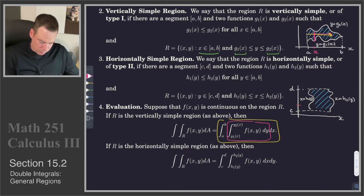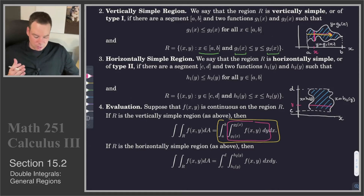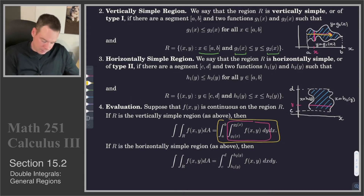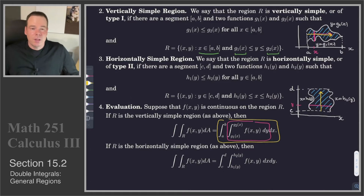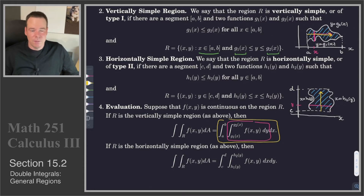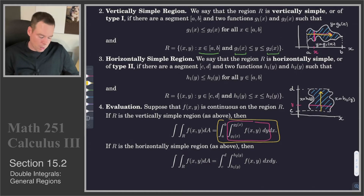Similarly, for a horizontally simple region, we pick a fixed y value first and integrate in the horizontal direction — the integral with respect to x as x ranges from h1(y) to h2(y). Then we let that y value sweep out all y values from c to d. Notice that the limits of integration of the innermost integral are not constants — they depend on the bounding curves — but the outer integral has constant limits, so the final answer is a numerical value.